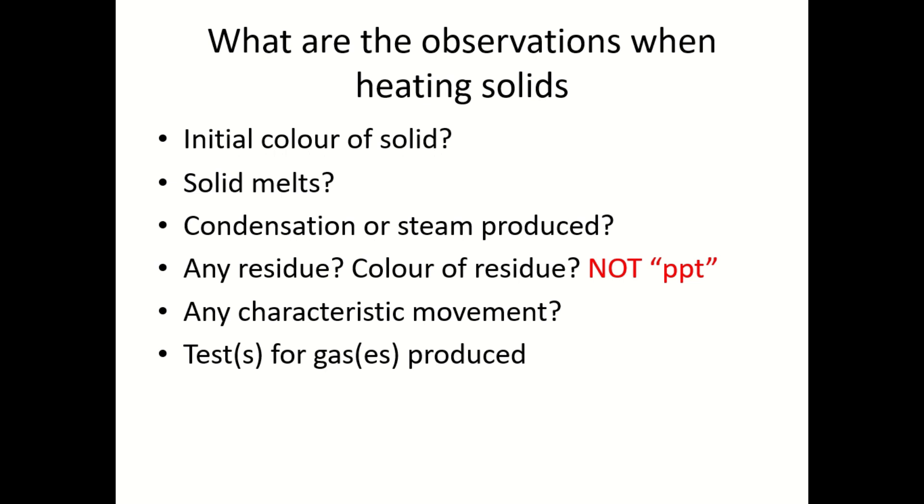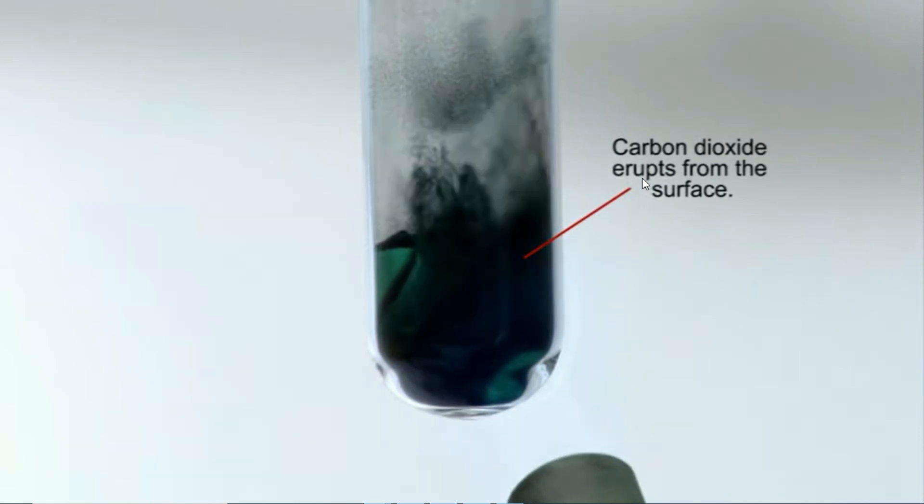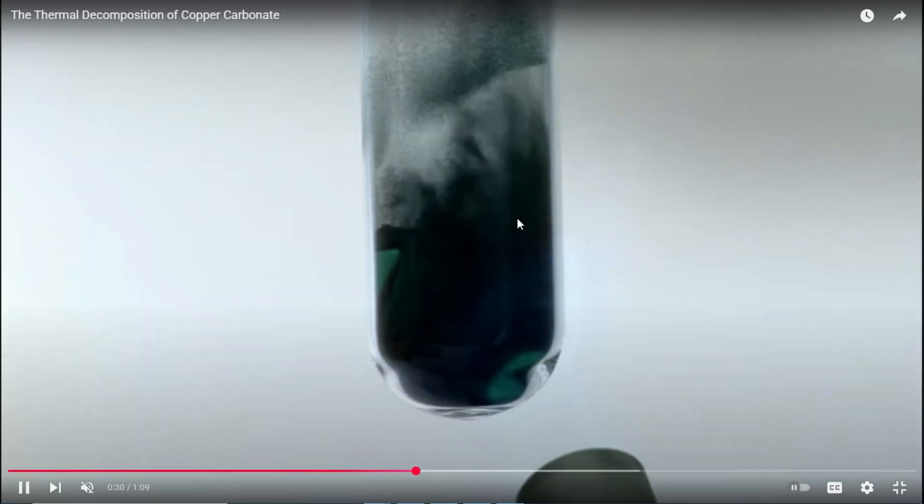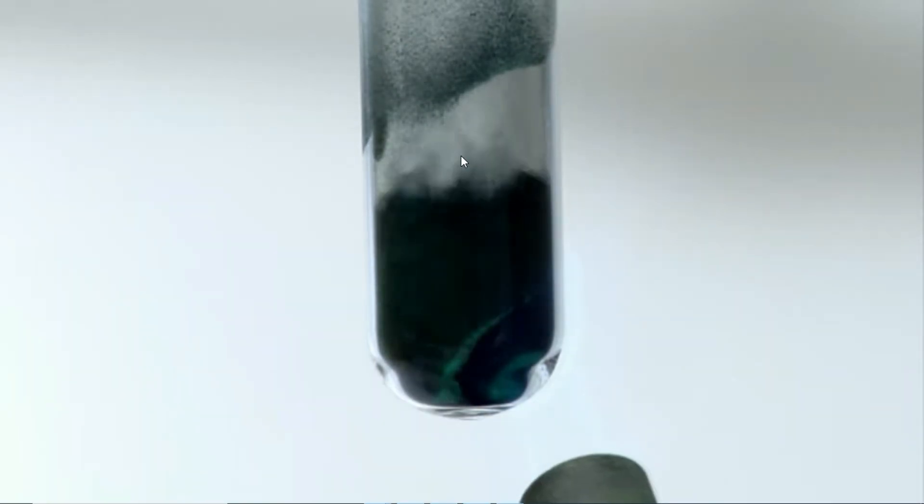Let's look at the second last question: any characteristic movement? Some solids will jump upon heating, for example copper carbonate. This is the same video that we were watching just now. Copper carbonate upon heating, the solid will jump around in the test tube. This is a very characteristic movement for heating copper carbonate, so please write down as one of your observations.